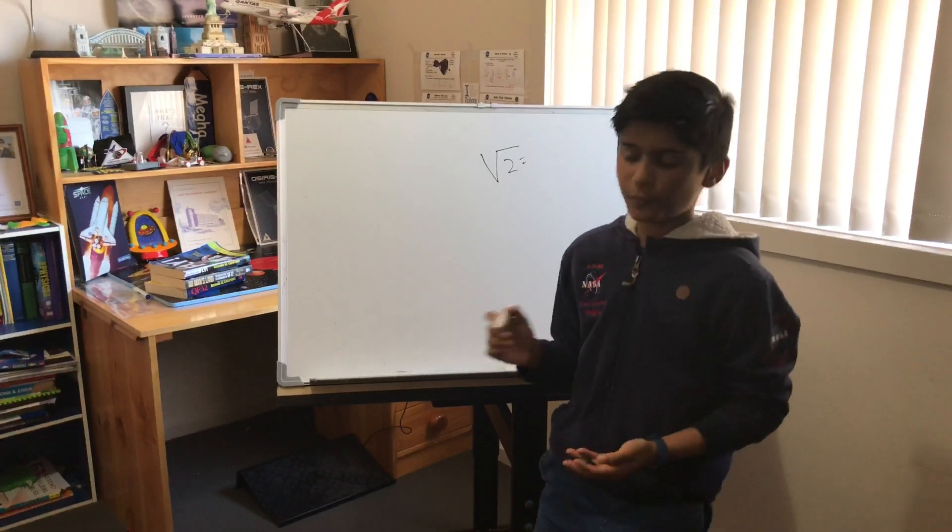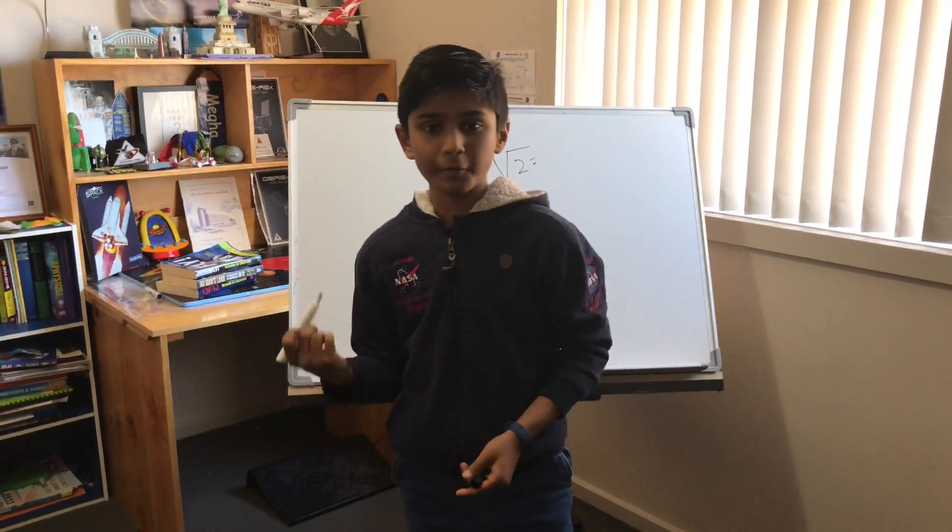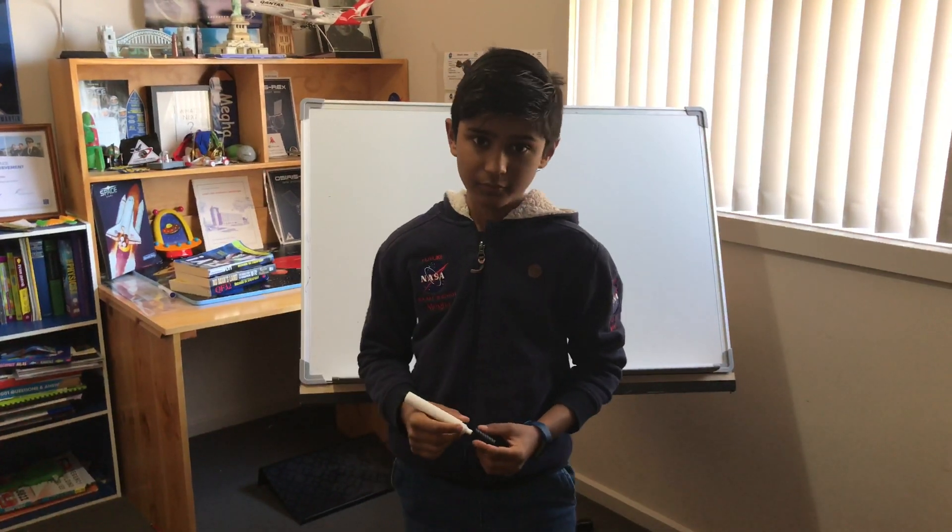But whatever he did, he couldn't work out the answer at all, because the square root of 2 was an irrational number.